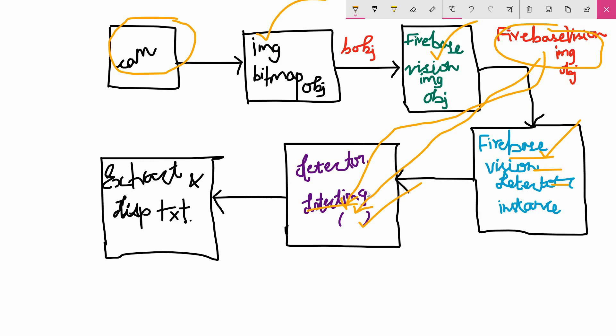In the onSuccessListener, we're going to receive a FirebaseVisionText value. We can extract blocks, and from blocks we can either extract lines and the text itself, or we can directly extract the text from the blocks without separating into lines and elements. We can extract the text as a full block, in the form of lines, or in the form of individual elements.